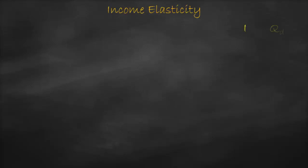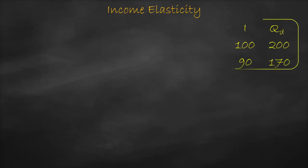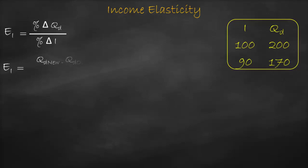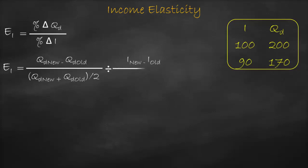Let's get another example for a normal luxurious good where income decreases. If income is 100 and quantity demanded is 200, and income decreases to 90, quantity demanded will be 170. Lower income leads to lower quantity demanded — they move in the same direction, so it's a normal good. Let's prove it with the income elasticity midpoint formula: new quantity demanded minus old quantity demanded, divided by the average of quantity demands, divided by new income minus old income, divided by the average income.